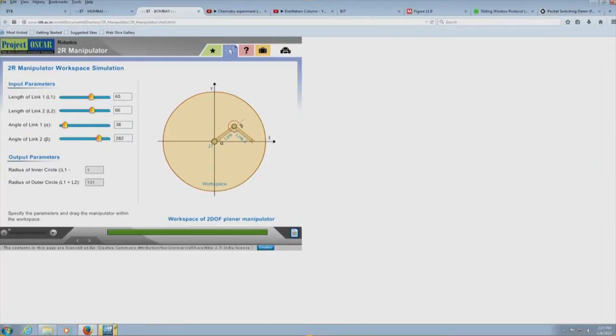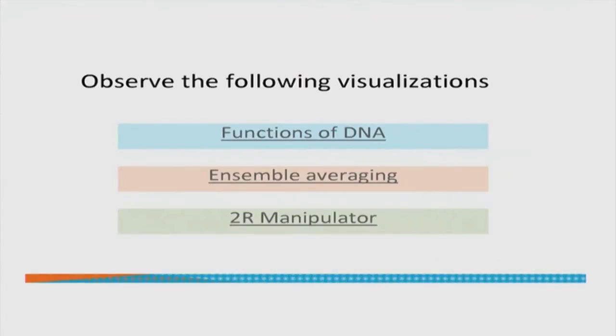We can either manipulate this using slider bars or by directly clicking on the links themselves. Essentially what we are trying to see is that in the first visualization we were more or less passively absorbing the content. In the second visualization there was a lot of description from the visualization, but also some amount of control given to the user in terms of setting variables and number of experiments. In the third visualization there was a lot of control in the user's hand to set different angles and lengths of the manipulator.